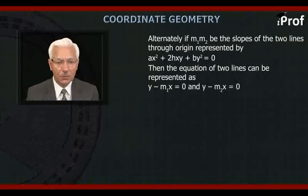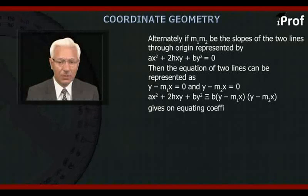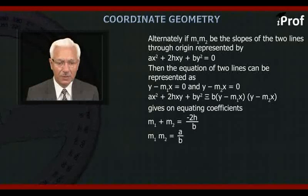Therefore, Ax² + 2Hxy + By² is identical with B(y - m₁x)(y - m₂x), which gives, on equating coefficients, m₁ + m₂ = -2H/B and m₁m₂ = A/B, which we have already established.